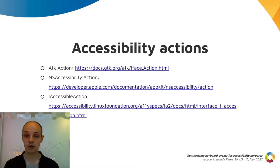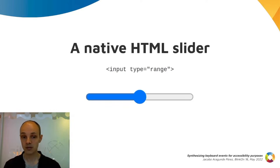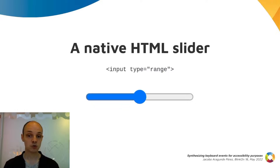A UI component is allowed to expose a list of operations, which can be different for every component. Going back to the slider example, this would expose actions named increment and decrement.